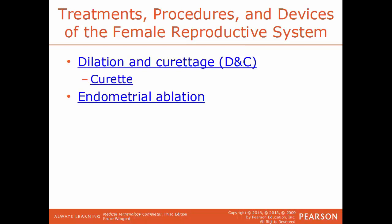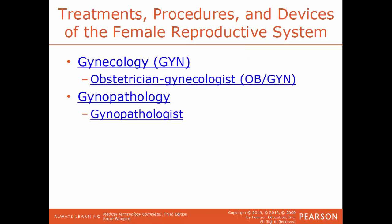Endometrial ablation is a surgical procedure that destroys the inner lining of the uterus — the whole point is to reduce menstrual flow and treat abnormal uterine bleeding. Gynecology is the field of medicine dealing with the female reproductive tract — a specialist in that field would be an OBGYN, obstetrician and gynecologist. Gyneopathology is the field of medicine dealing with the diseases of the female reproductive tract — a specialist would be a gyneopathologist.